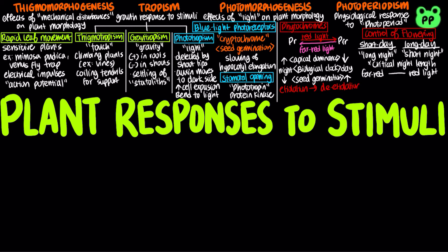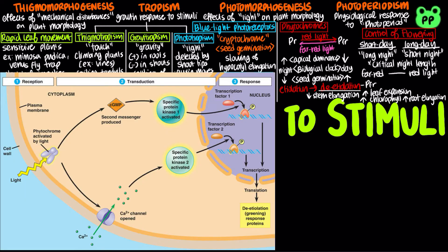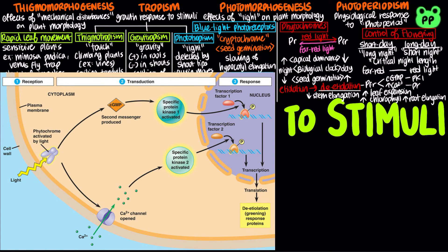Etiolation refers to a morphological adaptation for growing in darkness. Deetiolation is triggered by red light, which leads to a decrease in stem elongation, an increase in leaf expansion, chlorophyll production, and root elongation. The deetiolation response spreads through a signal transduction pathway. First, phytochrome is activated by red light, leading to the activation of the secondary messenger cGMP and also the opening of calcium channels, leading to an influx of calcium ions. cGMP activates specific protein kinase 1, whereas calcium ions activate specific protein kinase 2.